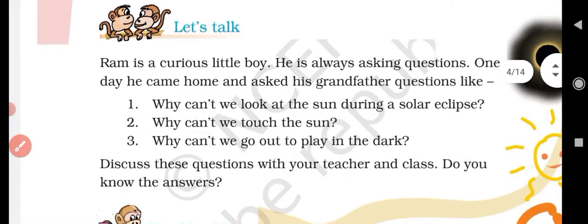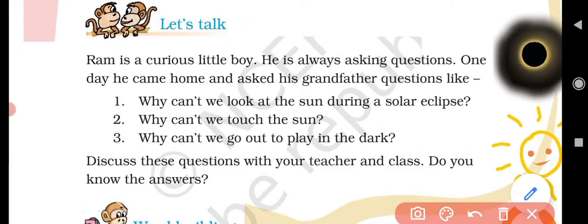Let's talk. Ram is a curious little boy. He is always asking questions. One day he came home and asked his grandmother questions like: Why can't we look at the sun during a solar eclipse? Why can't we touch the sun? Why can't we go out to play in the dark? Discuss these questions with your teacher and class. Do you know those answers?